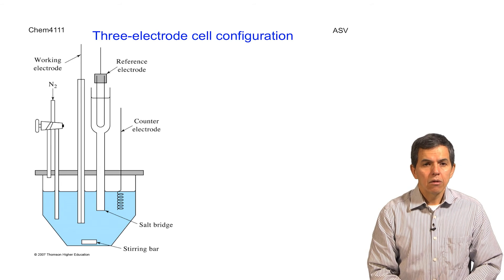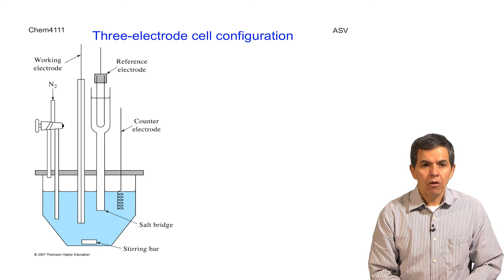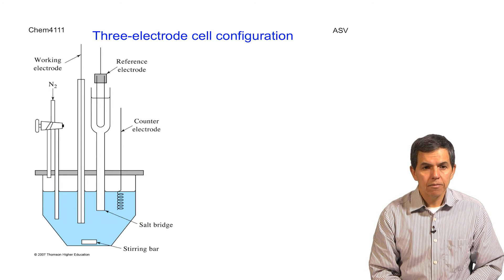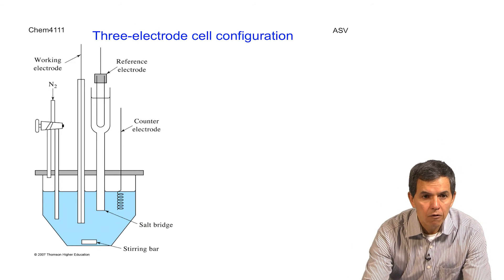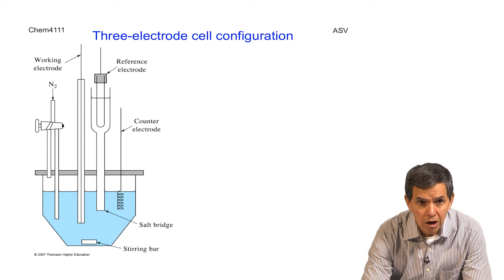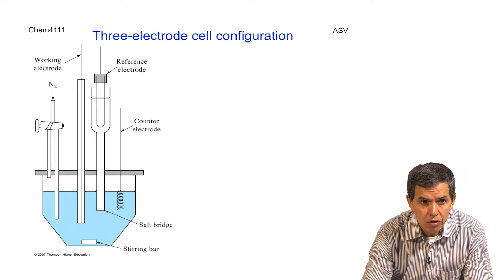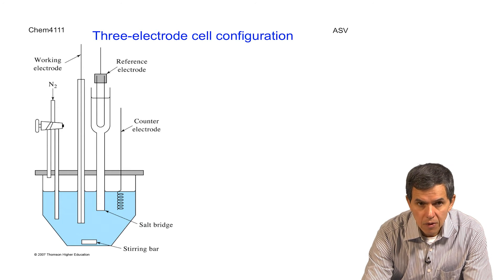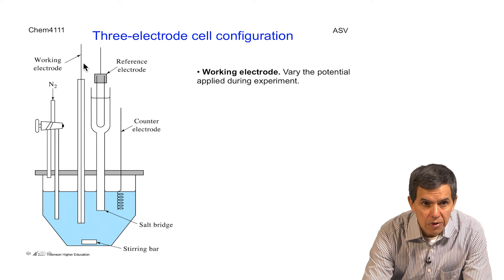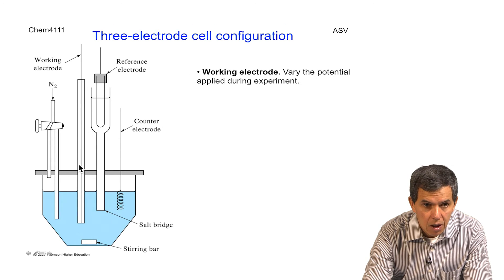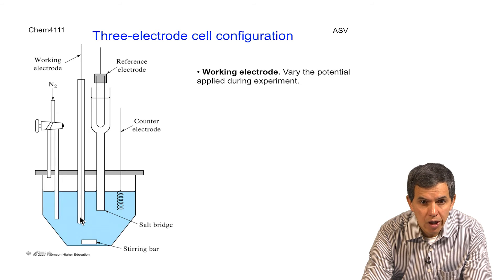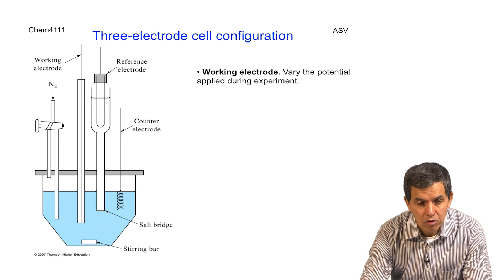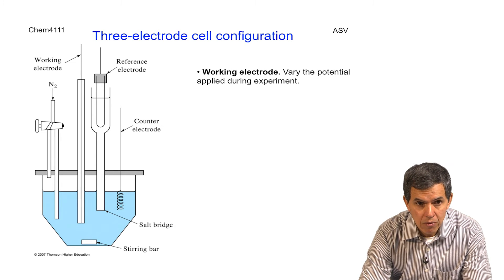How are these measurements done? For that, we use a setup that consists of three electrodes. Here is a diagram of a three-electrode cell configuration. We will start by reviewing what is the function of each of these different electrodes. The first electrode is the working electrode, represented in this diagram by this bar. The working electrode is the one that will experience the changing potential during the experiment. It is the one that was represented in the previous diagrams.